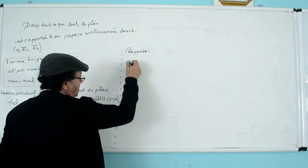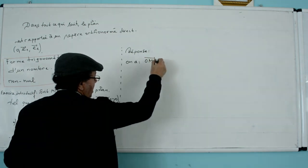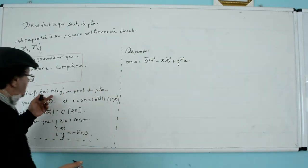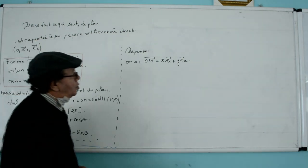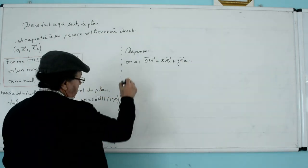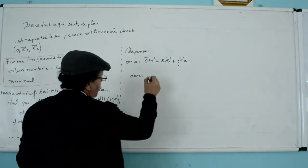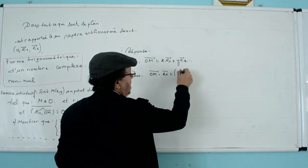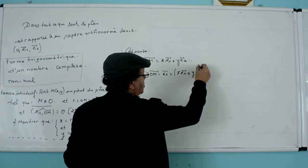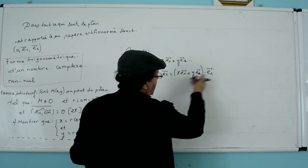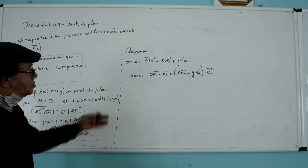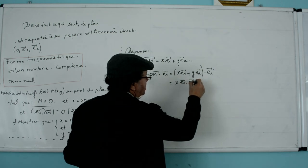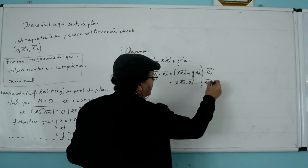Here we have the vector OL integral X E1, plus Y E2. The vector OM scalar E1, is integral X E1 plus Y E2 scalar E1. We will use the properties already found of the scalar product. The first is X E1 scalar E1 plus Y E2 scalar E1.